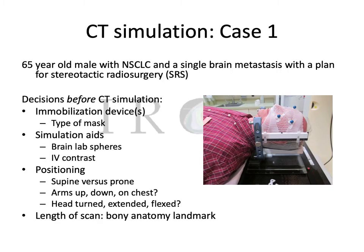The first case is a 65-year-old male with non-small cell lung cancer and a single brain metastasis, and the plan is to give stereotactic radiosurgery. This is common and can be done in multiple different ways depending on what equipment and machine types you're going to use. You're going to want to think about what type of immobilization devices you need. If you're doing a frameless type of stereotactic radiosurgery, you'll want to think about the type of mask. The mask shown takes quite a long time to dry, so you have to make sure your patient is able to tolerate laying in that position for that amount of time.